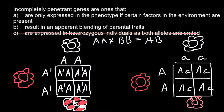So once again, answer B is the incorrect answer for our question. It results in apparent blending of parental traits, and this is a classical example of incomplete dominance — so we cross out this answer as well. The only answer left is answer A: are only expressed in the phenotype if certain factors in the environment are present.